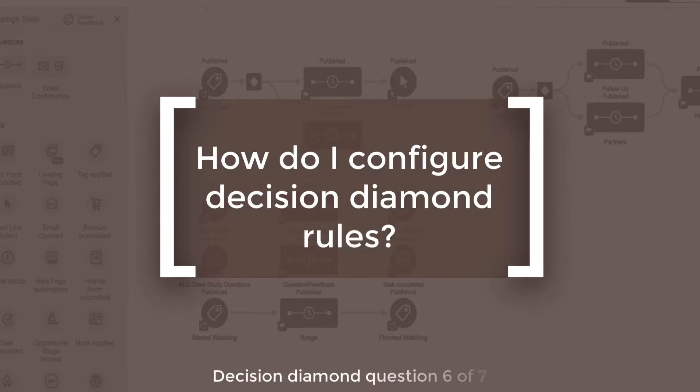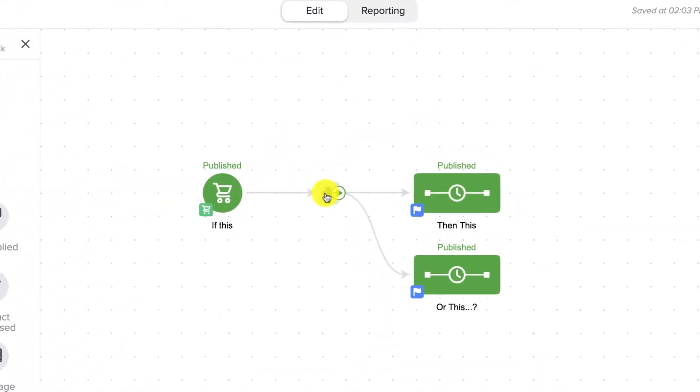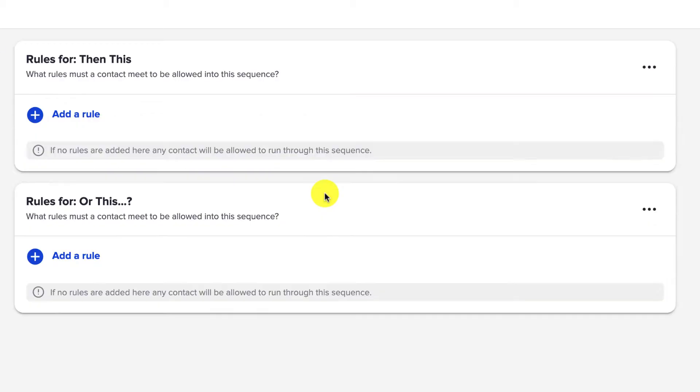Which brings us to question number six: how do I set up the rules inside my Decision Diamond? Like any element on the Campaign Builder Canvas, if you double click on the Decision Diamond, you are taken into an interface that allows you to set up the rules for each of your various outcomes, for each of your various sequences.